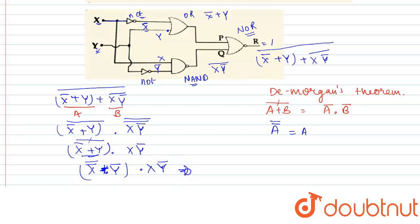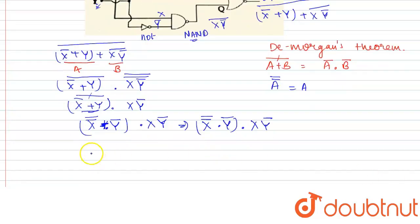I will write clearly, this will become x̄̄·ȳ·x·ȳ. This will also be ȳ. So on solving this we will get x·ȳ·x·ȳ. x·x will give again x, and ȳ·ȳ will be ȳ. So this will be output of this circuit.